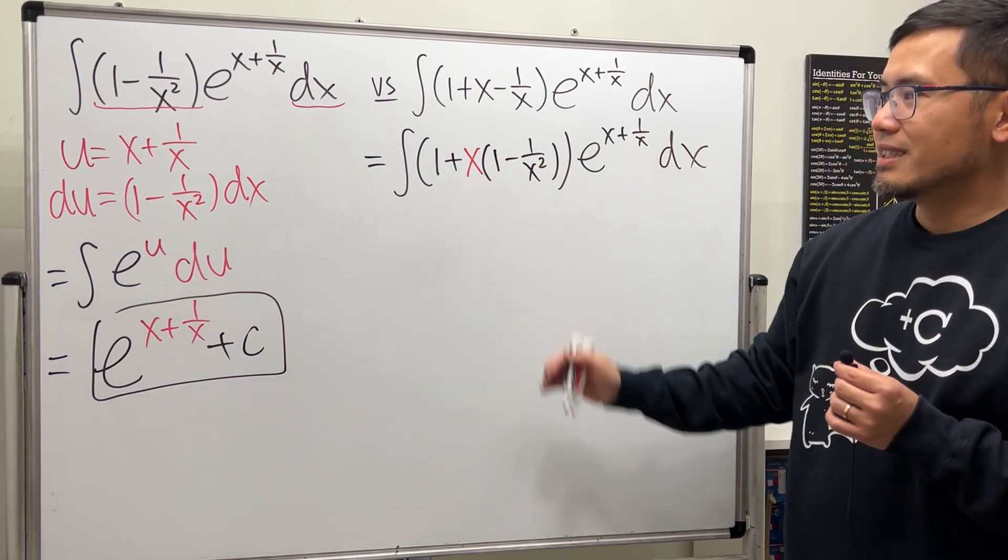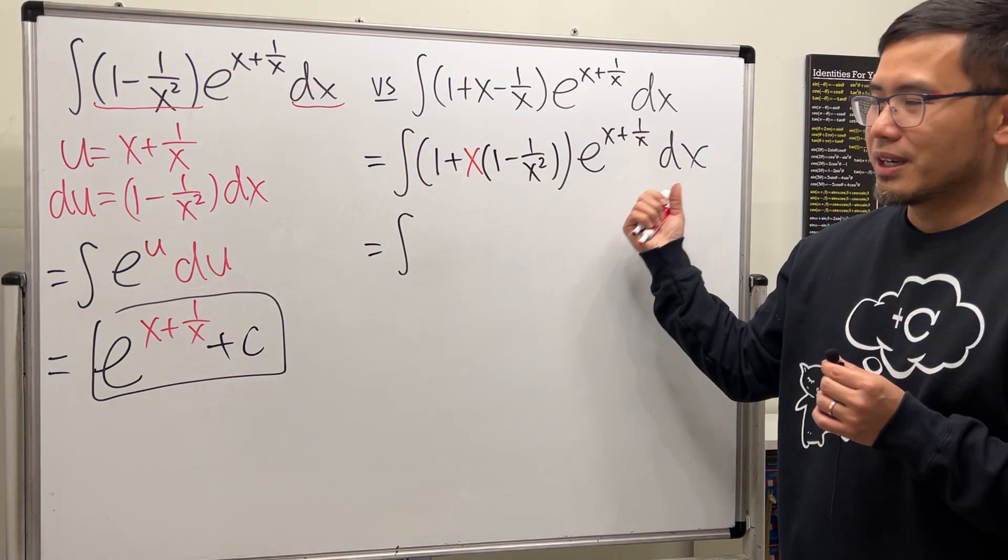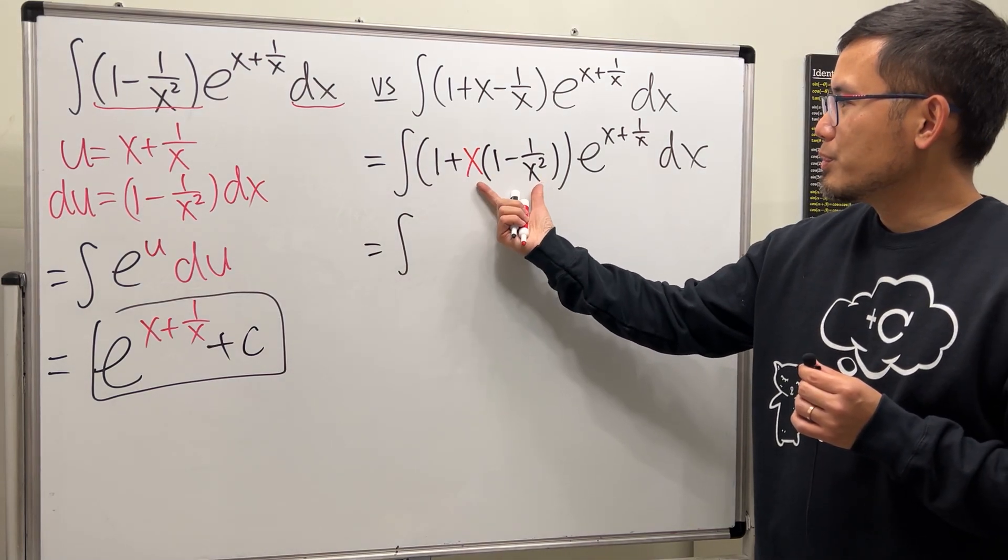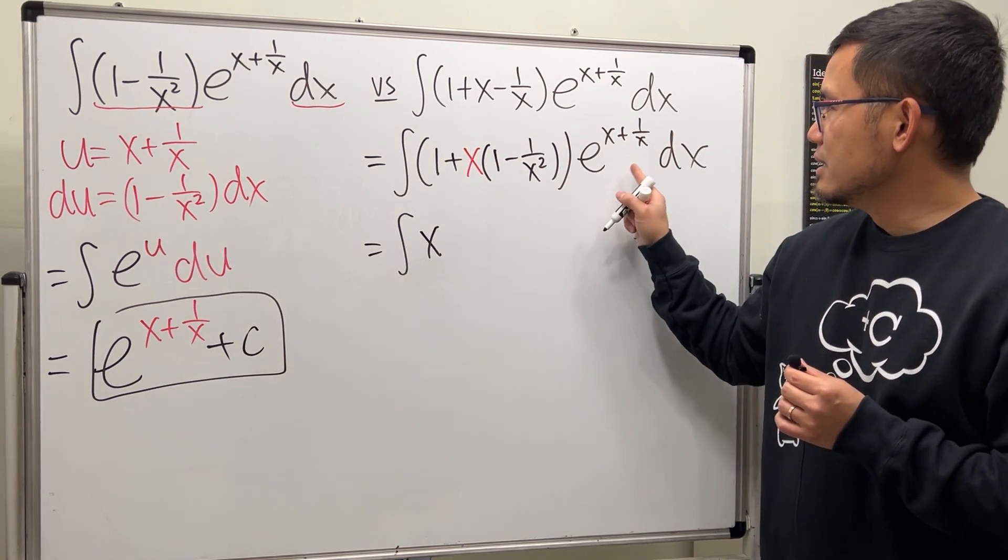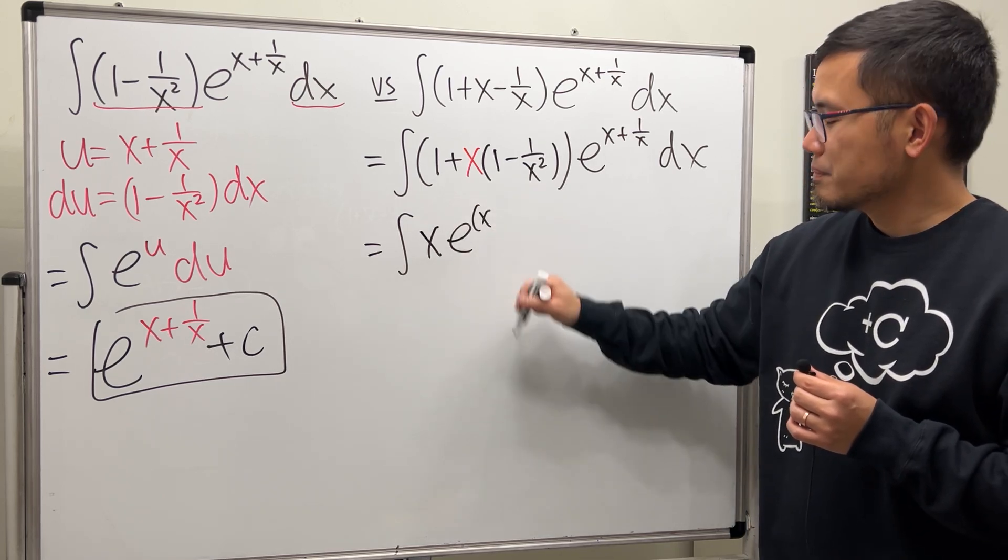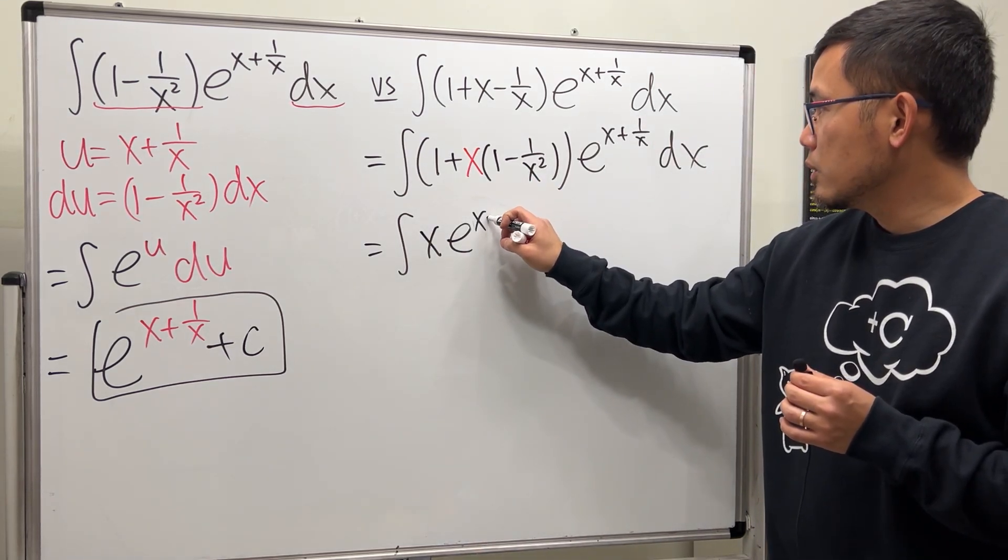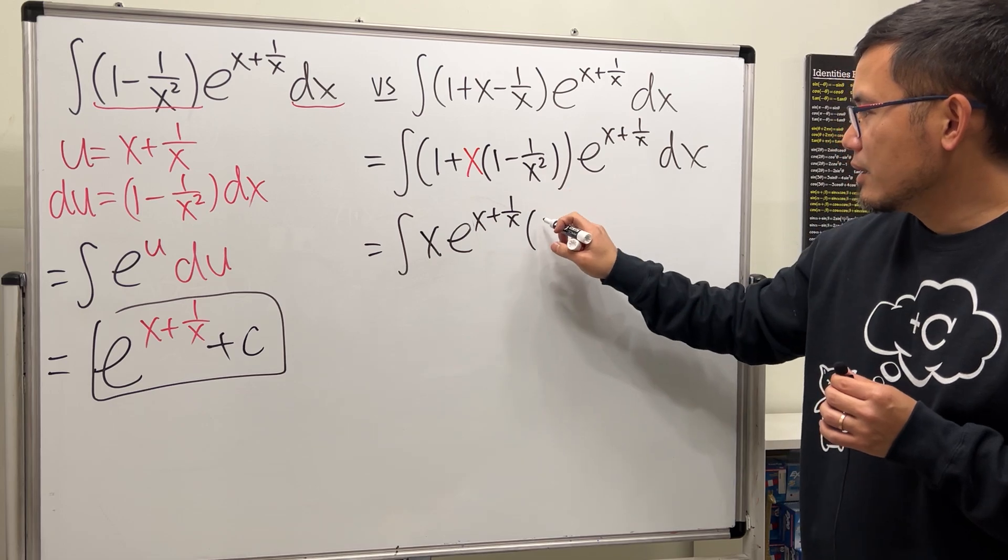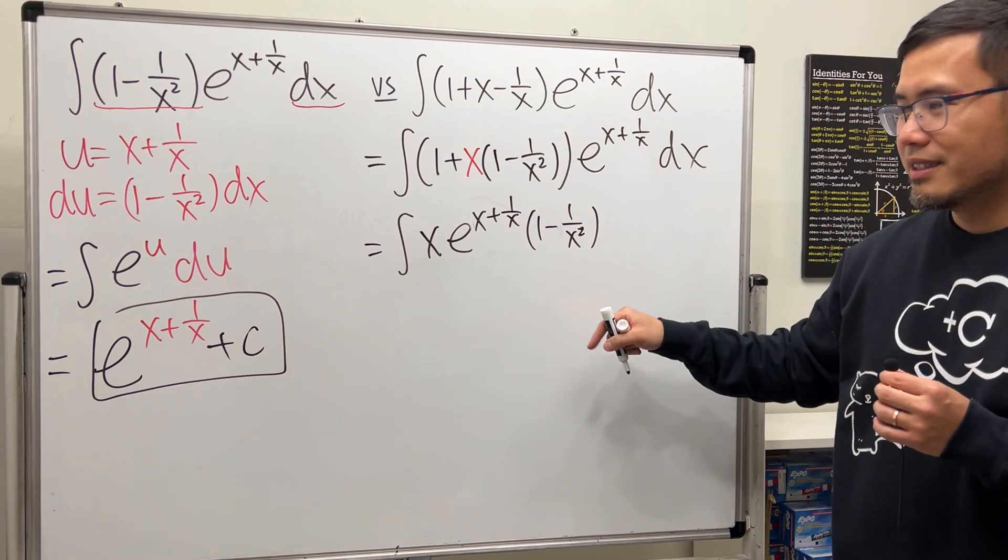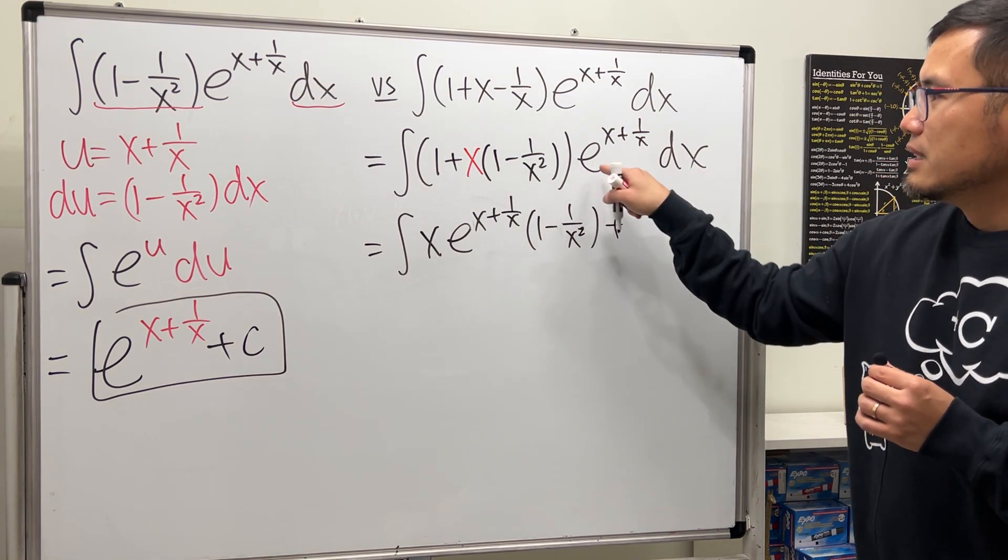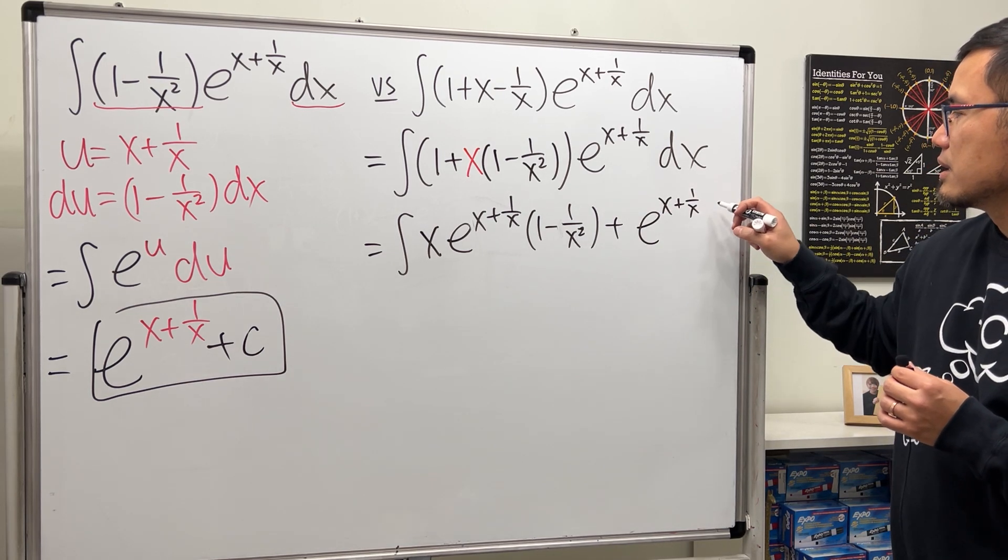Let's distribute, right. So this right here is the integral—let me put this down like this for you guys. Alright, I am going to put this down times that, this times that. So we have x times this, e^(x + 1/x)—I don't want to use the parentheses, let me just put that down—but times this guy, 1 - 1/x². Aha, some of you guys see what's going on already, right? Yeah. And then plus this times that, so just e^(x + 1/x) dx.